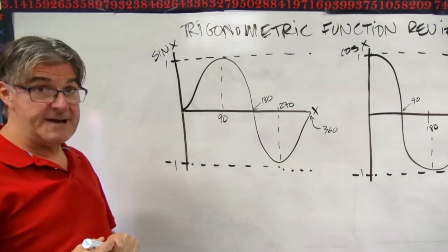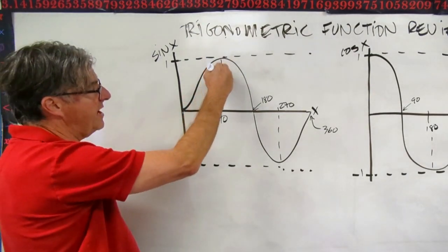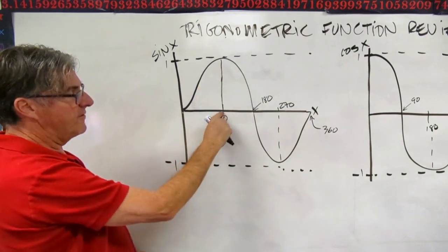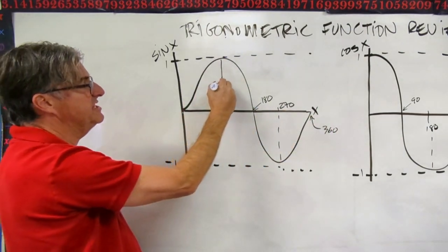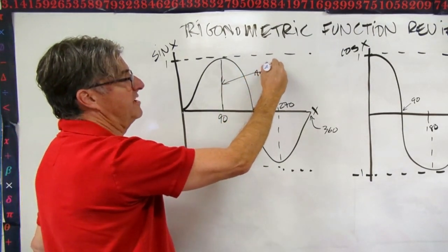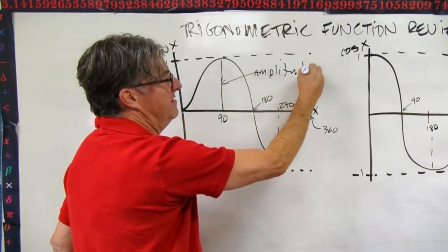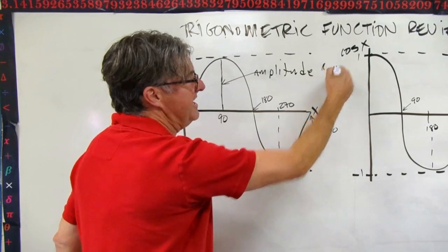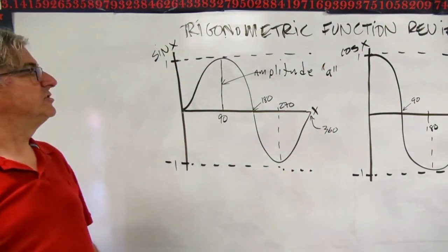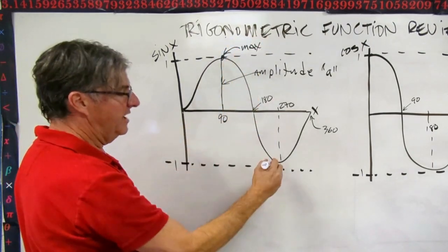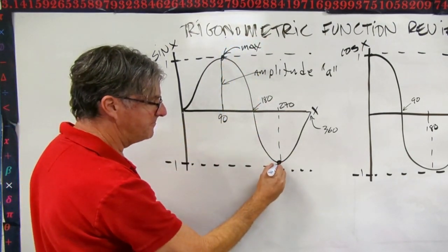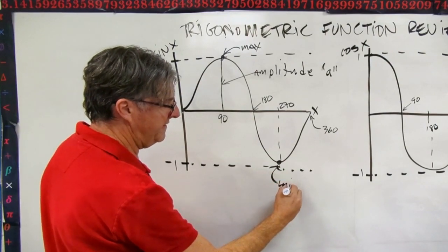Now let's talk about a few of the parameters. This parameter right here, the height from the principal axis to the max, this is the amplitude. And we use the little a to designate amplitude. This here, of course, that's the max. And this down here is the minimum. We'll just call it the min.